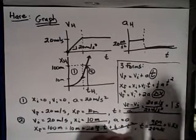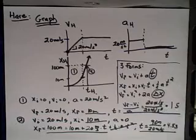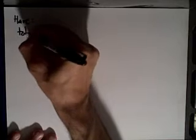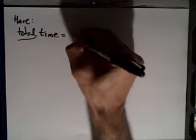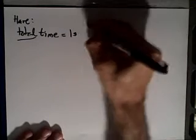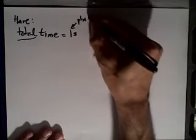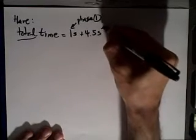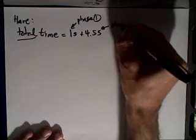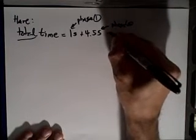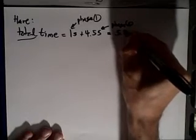4.5 seconds. So the total time taken by the rabbit then is the sum of these two, is 5.5 seconds. So let's just sum up all of that. So then we've just learned that for the hare, total time equals one second, that was from phase one, plus 4.5 seconds, that was from phase two. So the total time taken by the hare is 5.5 seconds.